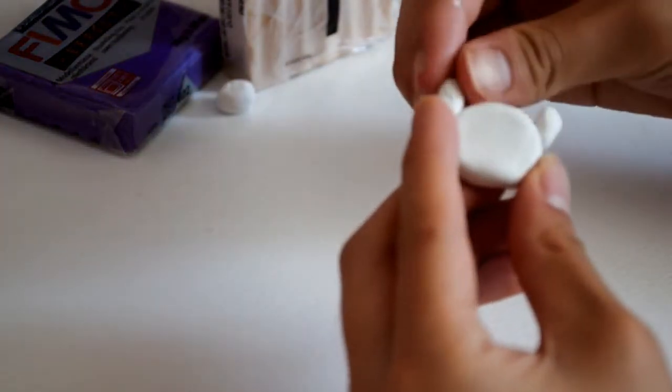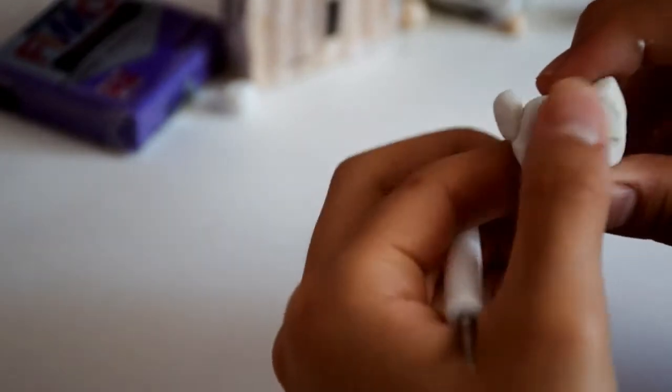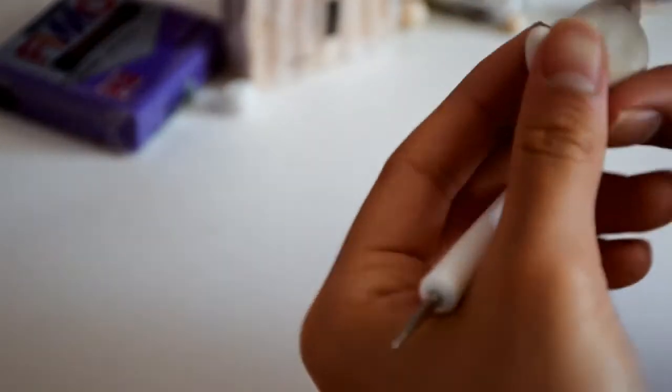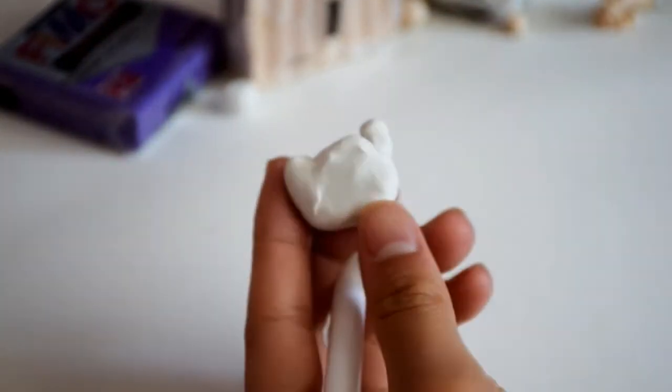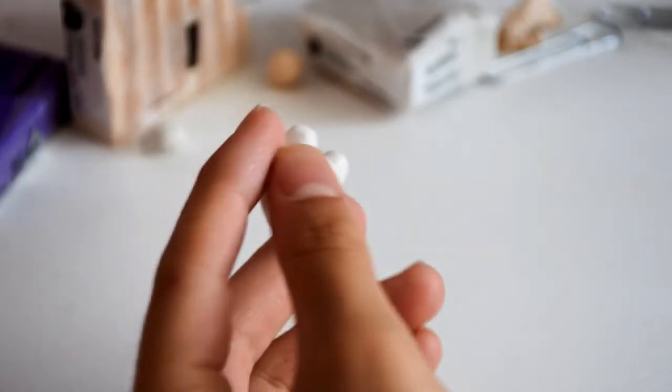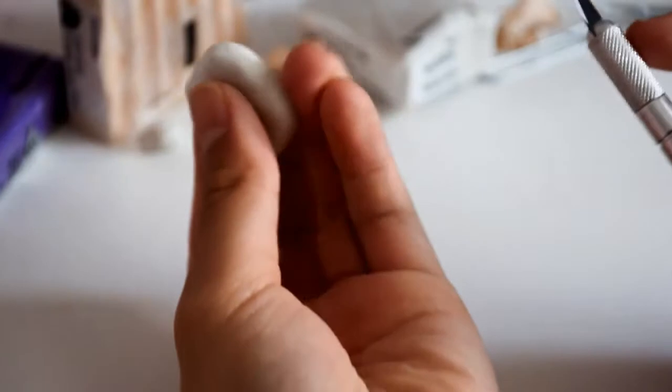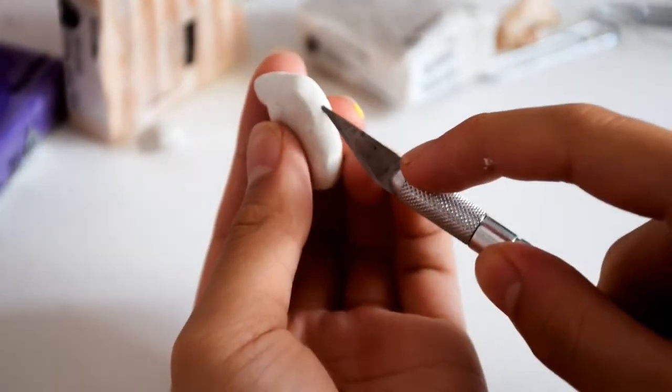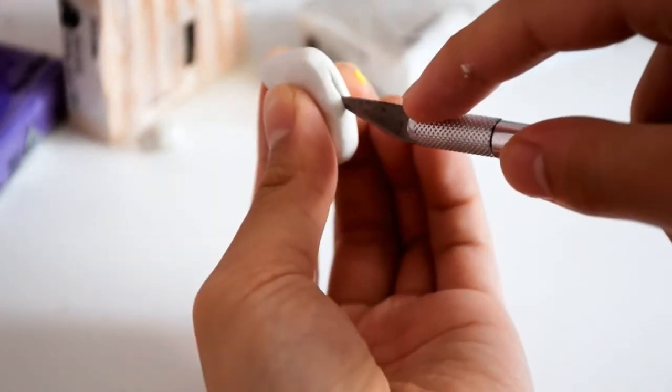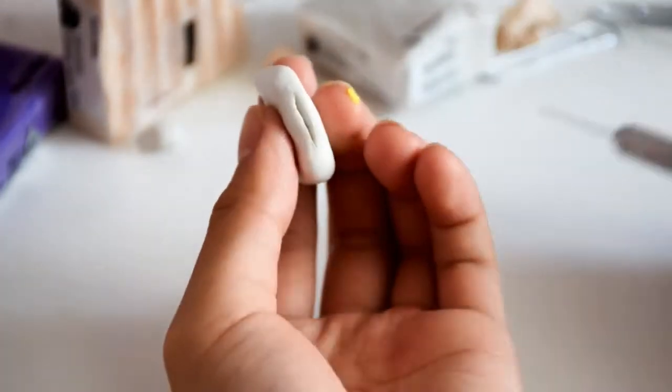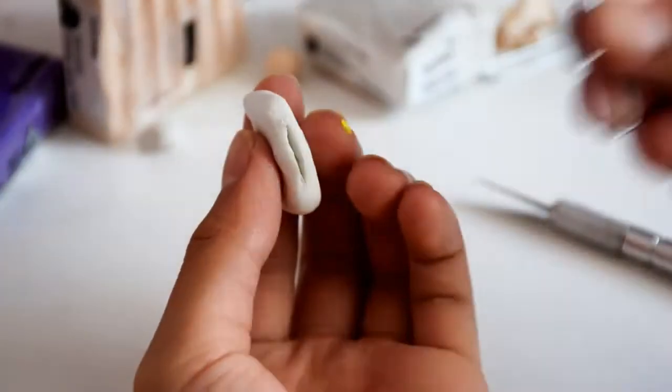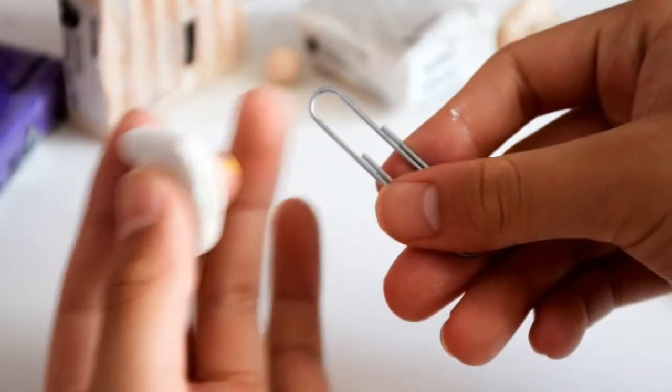And then I'm just using my hands, and you can also use a ball tool, but I'm just blending the ears with his head. So now I'm just cutting the bottom with an X-Acto knife, and you want to make sure that it's pretty thick so you can stick the paper clip in.